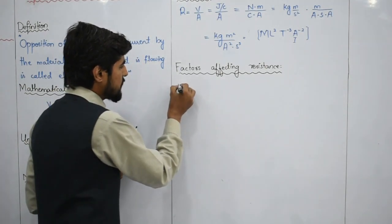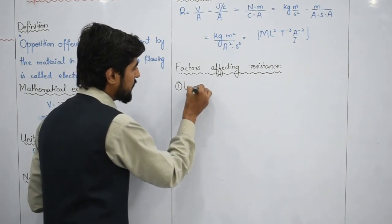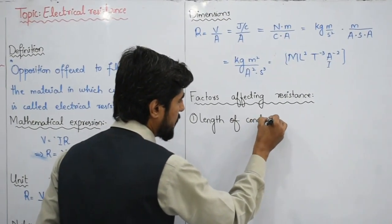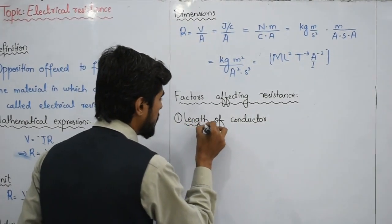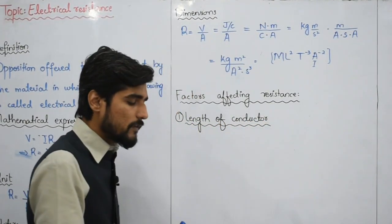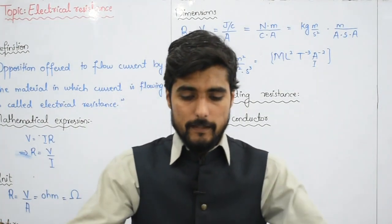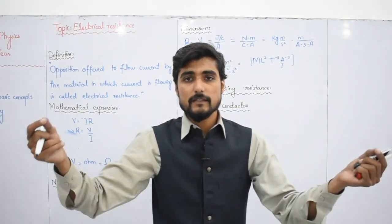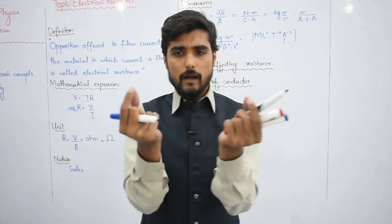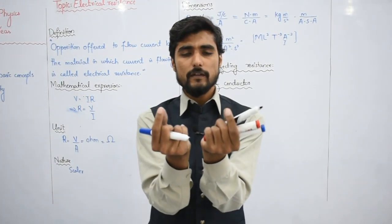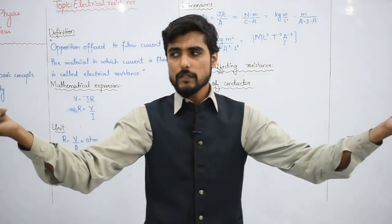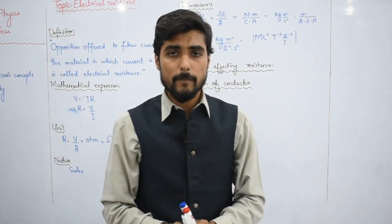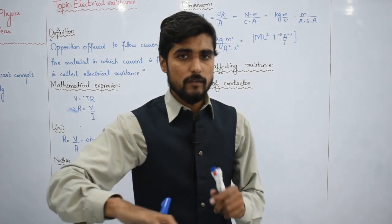The first factor is that electrical resistance is related to the length of the conductor — the length of the material in which the current is flowing. This is a common observation: when a charge travels from one end of a conductor to the other, if the length is less there will be fewer collisions. If the length is greater, the number of collisions will increase, and therefore the electrical resistance will increase. This means length and electrical resistance have a direct relation — electrical resistance is directly proportional to the length of the conductor.